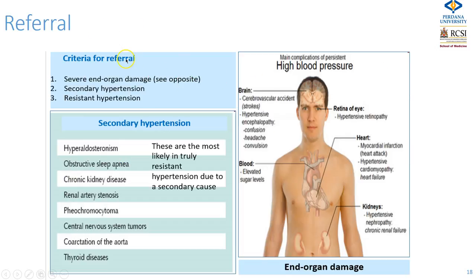When should you refer to secondary care? Clearly those who have severe end organ damage, secondary hypertension, or resistant hypertension. These tend to occur more in patients with truly resistant hypertension — but there are many more common causes of uncontrolled hypertension to consider first.